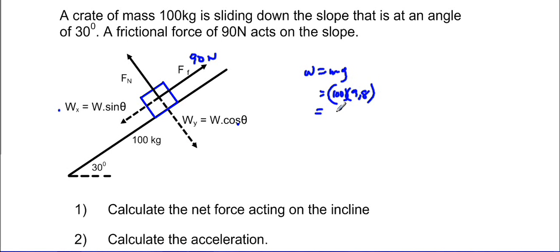And that will give us 980 newtons. So if you look at our f net, our net force in this case, it will be equal to our w sin theta, which is pulling the object downwards, plus our frictional force which is acting. Those are the two forces that are acting on the incline.